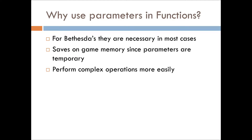So why use parameters in functions? First, Bethesda has a lot of functions that require parameters — in order to perform operations like moving a character or changing a character's health, you need to give them values. Another reason is you save on game memory, because parameters only exist as long as that function or event exists; after it runs its course it's removed from memory, saving on runtime. You can also perform complex operations more easily — Fibonacci sequences, adding health, complex profit formulas for a player-owned mine, and all sorts of things.